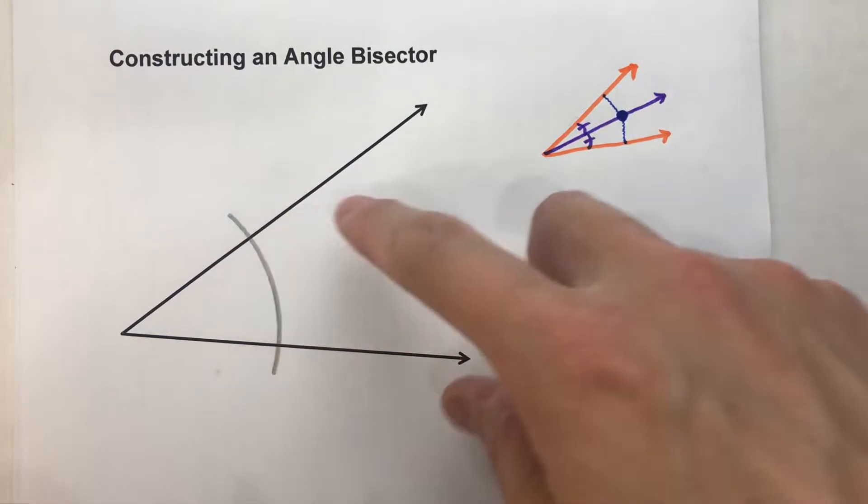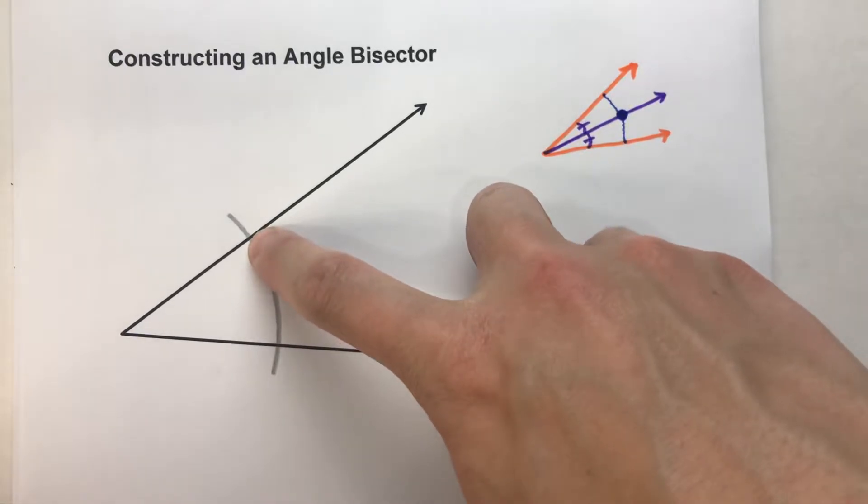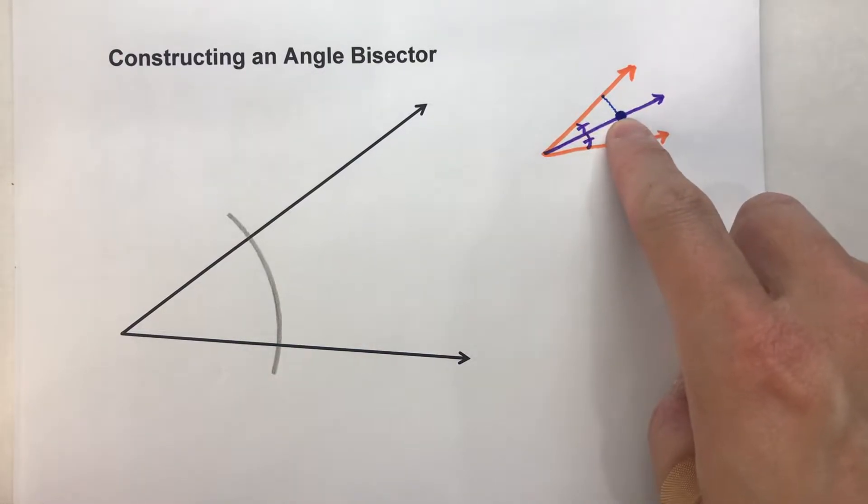Now, what I want to do is find a point that's equidistant from this point and that point. So we're kind of looking for this point right here.